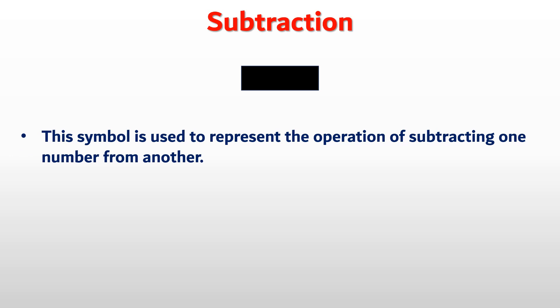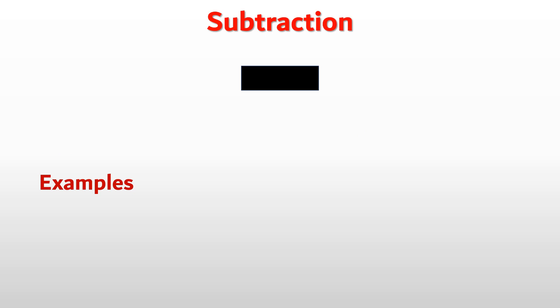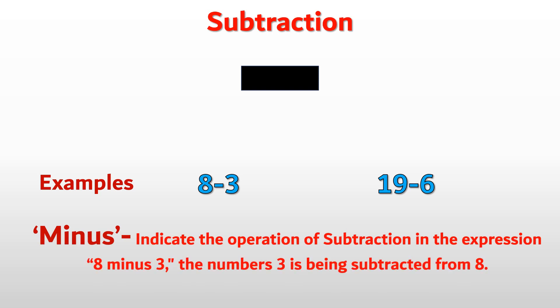Next, Subtraction. This symbol is used to represent the operation of subtracting one number from another. Examples: 8 minus 3, 19 minus 6. Minus indicates the operation of subtraction. In the expression 8 minus 3, the number 3 is being subtracted from 8.